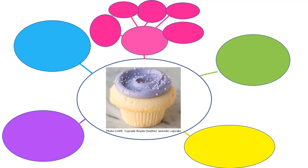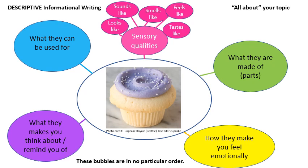I've set up my bubble map with that cupcake in the center, and then I have all these different features going across the sides. One of the features is sensory qualities — what does it look like, sound like, smell like, feel like, taste like? What are they made of, what are the ingredients — that would be a whole different aspect. Another thing I might want to talk about is how lemon-lavender cupcakes make you feel, what they make you think about, or what they remind you of. We could talk about what they can be used for. There might be lots of other aspects you could talk about, and you'd make a separate bubble for each one.